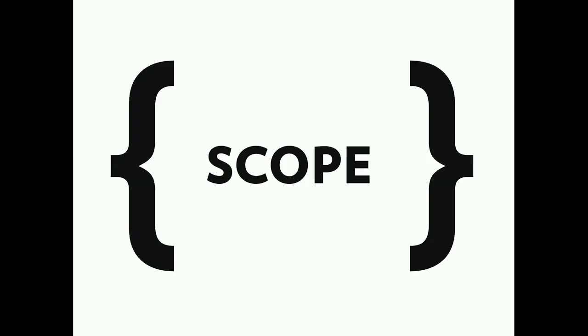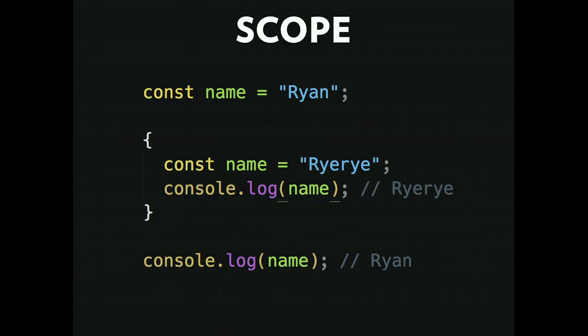That takes us to scope. What's the new scope in ES6? This is all you need to know: these curly brackets define a new scope. When I have 'name = Ryry' inside curly brackets and log that, I get Ryry — no error about redefining. If I log it outside of this scope, I get the outer name: 'console.log name' equals Ryan.